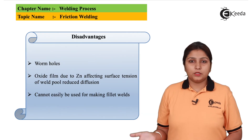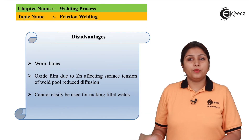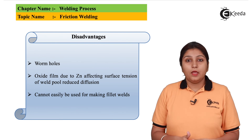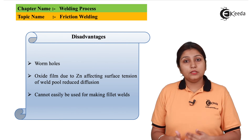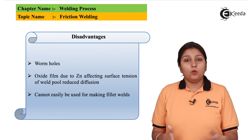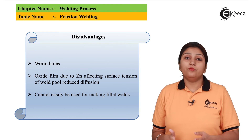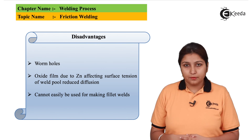There are some disadvantages: due to friction, oxides form on the surface. Also, because friction welding can only weld rotating objects, you cannot weld fillets using this process. Thank you for watching, stay tuned with Ikeda and do subscribe to our channel.